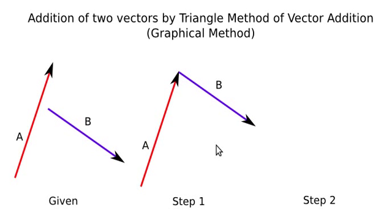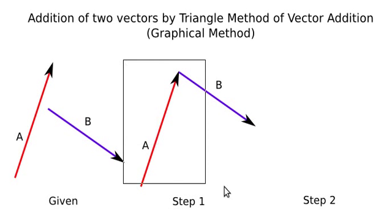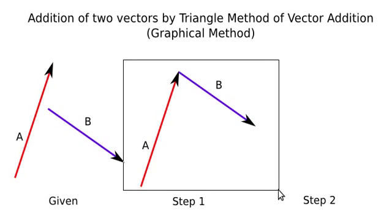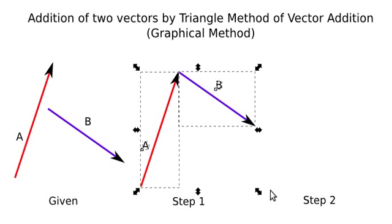In step two, I will join the tail of vector A to the head of vector B, and the resultant vector joining the tail of vector A to the head of vector B is the resultant vector.